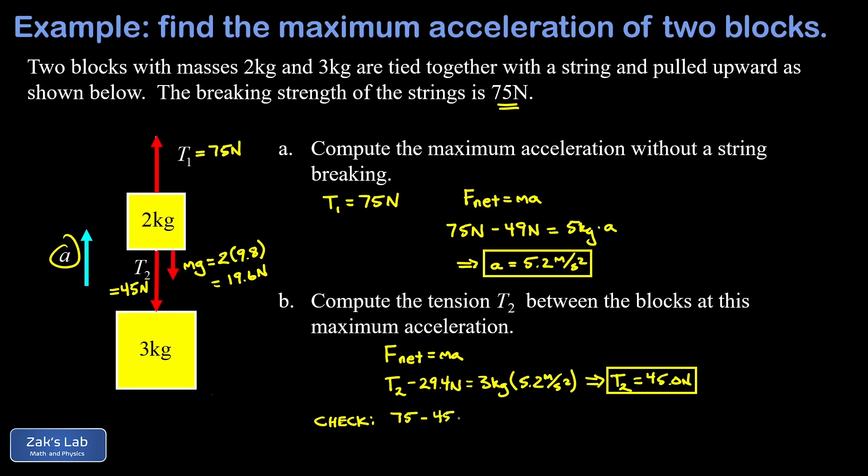Now we apply Newton's second law to this guy and I have 75 newtons pointing upward, I've got 45 newtons pointing downward - that's the string pulling down on this block - and an additional 19.6 newtons pulling down on this block. That's going to be equal to the size of the mass which was 2 multiplied by a.